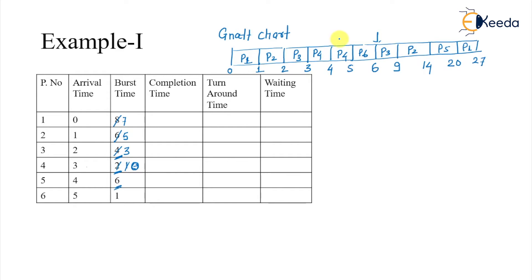This completes the Gantt chart. Now let's note the completion times: P1 completes at 27, P2 at 14, P3 at 9, P4 at 5, P5 at 20, and P6 at 6. Verify your results: P2 completes at 14, P3 at 9, P4 at 5 — yes, that is correct.